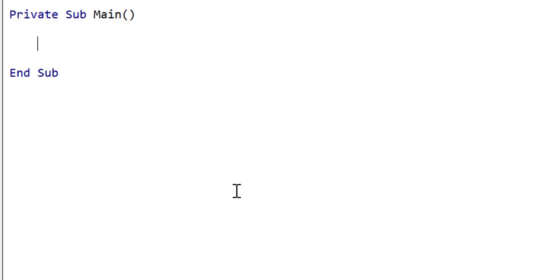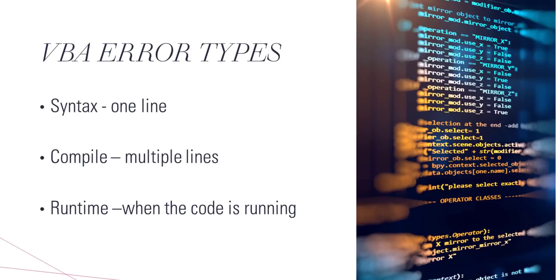The most important thing when dealing with errors in VBA is that we should understand what exactly they are. We can classify errors into three types: syntax errors, compiler errors, and runtime errors. Let's have a quick look at each so we can understand what they are and how we should deal with them.